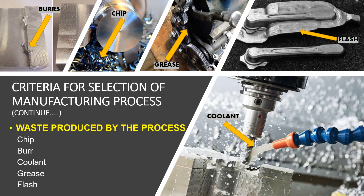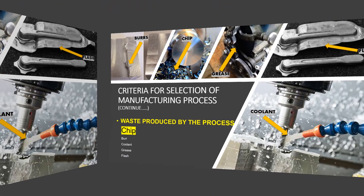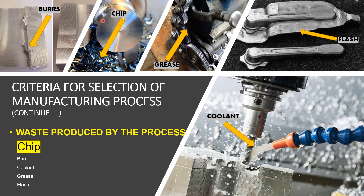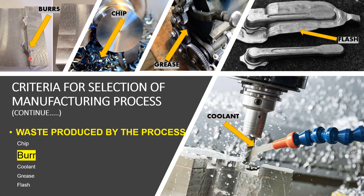One of the most impactful criteria on product cost and manufacturing process selection is wastage of material. It is mostly generated during machining processes because material is removed from the raw material in the form of chips — for example, chips produced during turning on a lathe machine. Burrs are unwanted material produced during machining operations on machines like lathe and milling. The amount of burr is less but must be removed before packaging using grinding and filing processes.